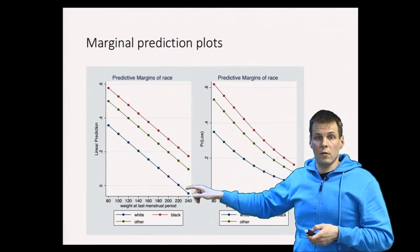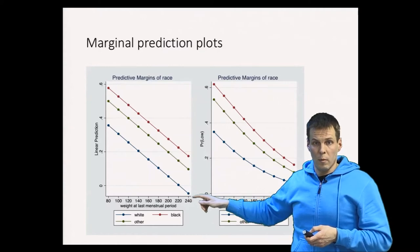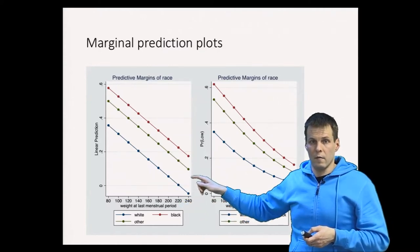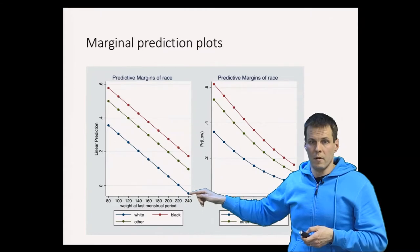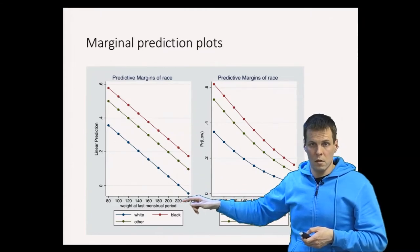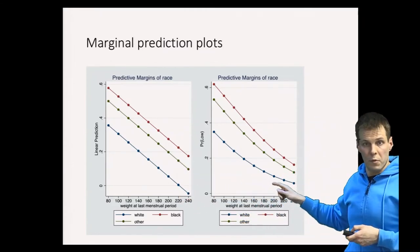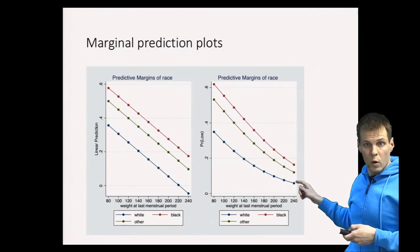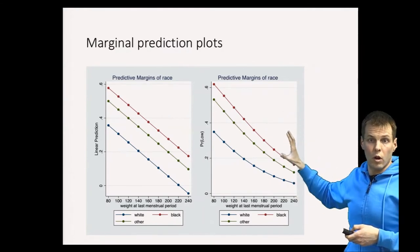We can see here that the linear probability model predicts a negative probability for some heavy white mothers and this model always predicts between zero and one. So this is statistically more appealing.